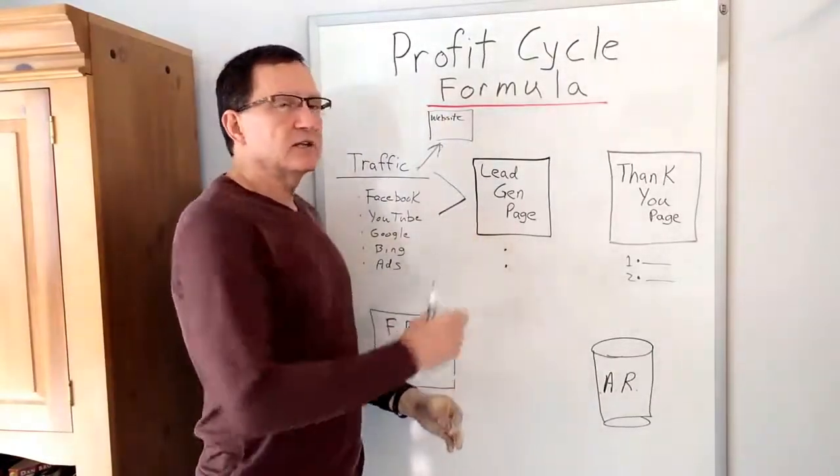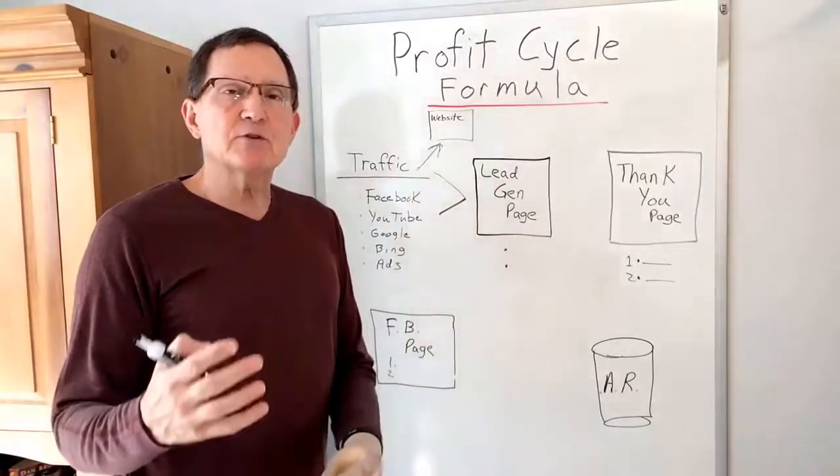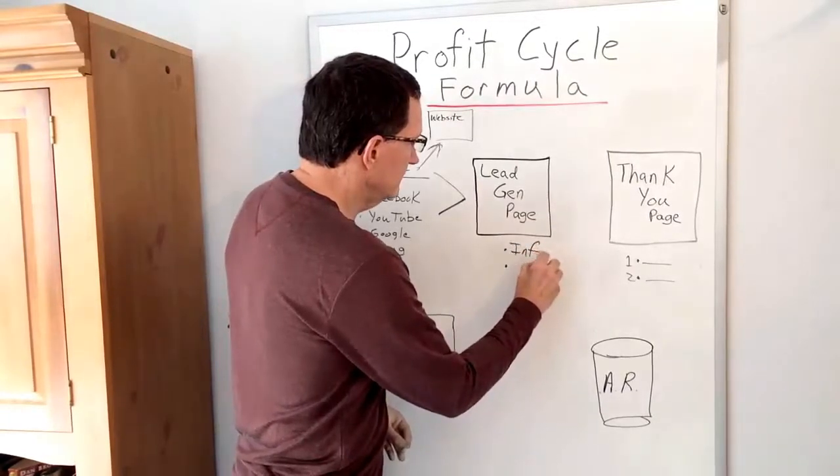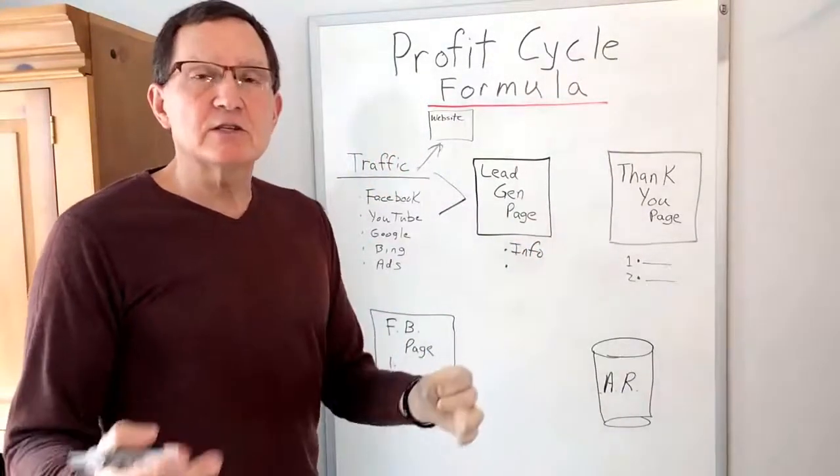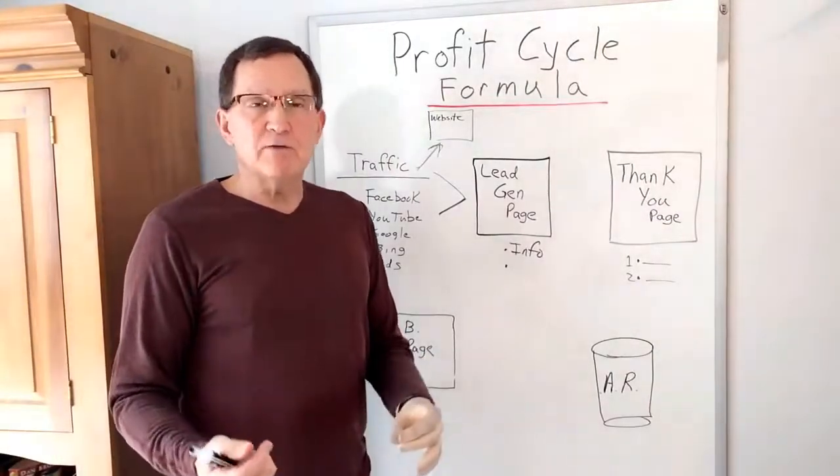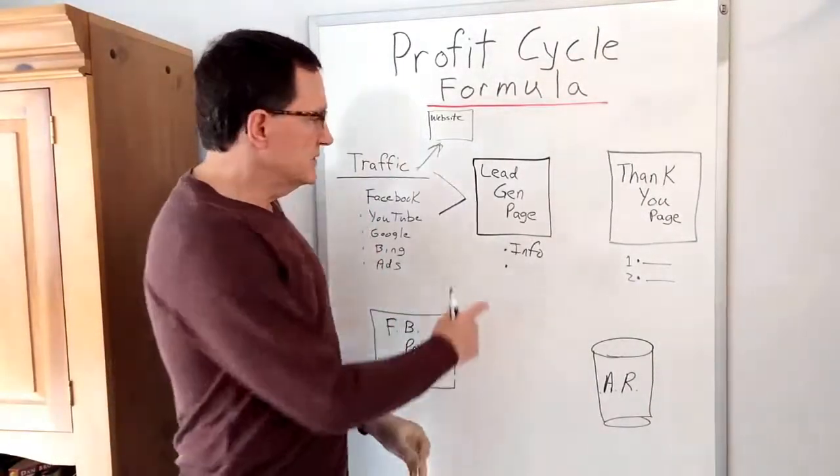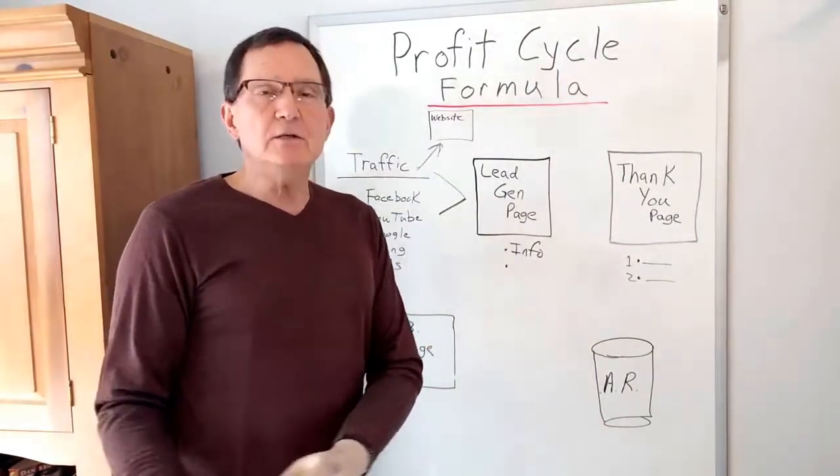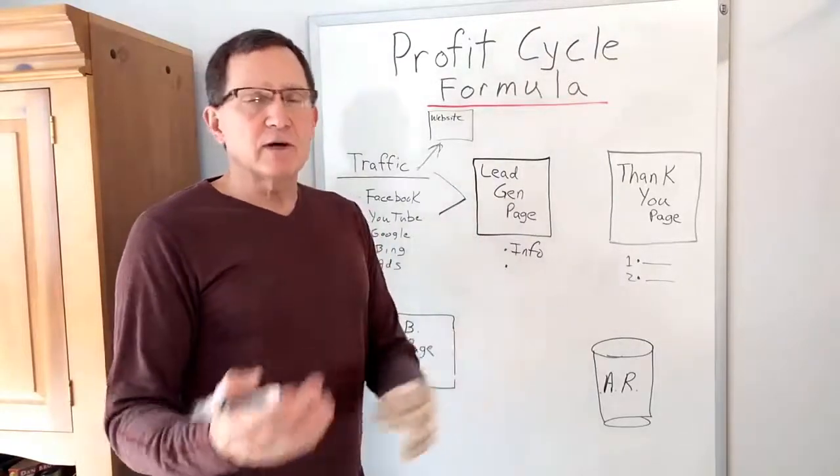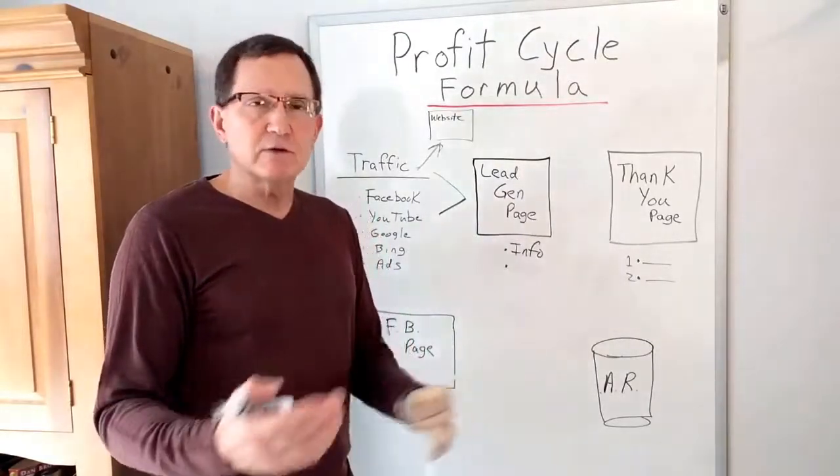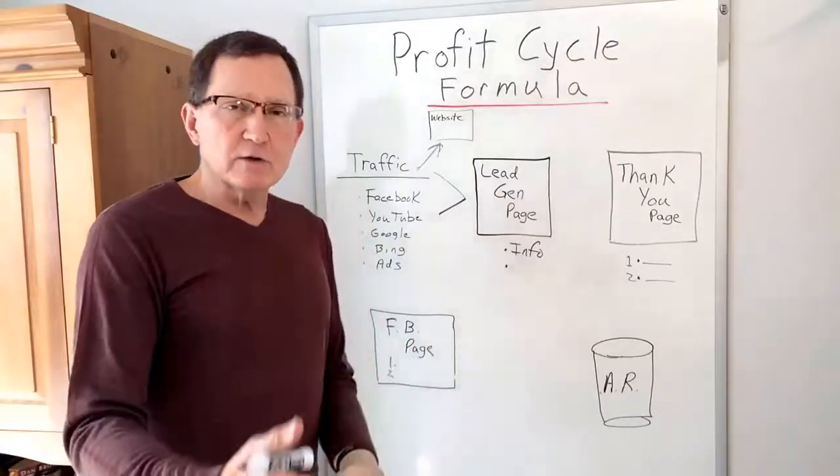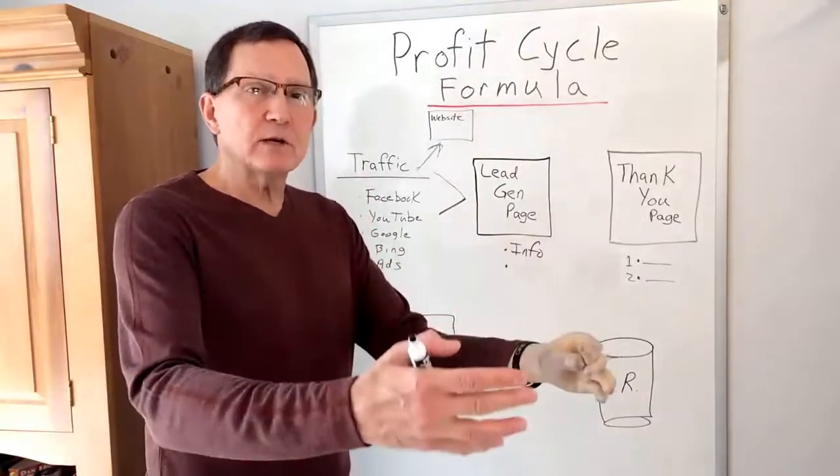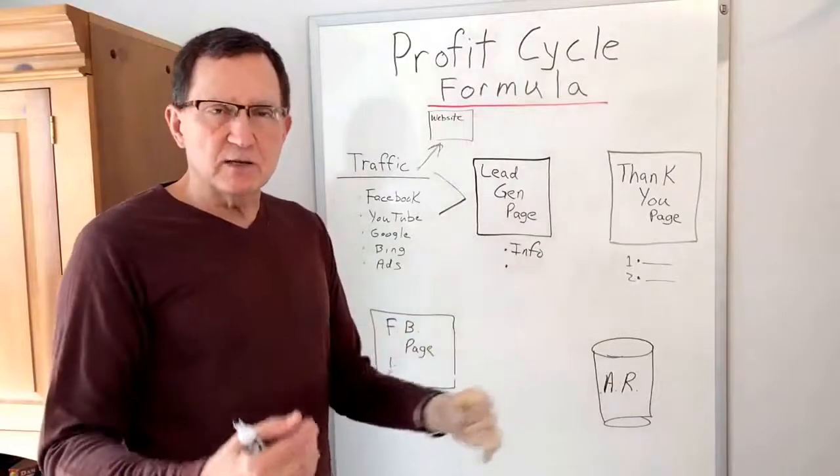The lead generation page is designed, it's optimized to capture their information. What's really important here is we get their information. Their information is typically their name, their email, maybe their phone number. It just depends on your business and what you're trying to collect. But it's important that we ask them for their information. Now you all know in exchange for information, we need to give them something. That's typically a giveaway. Maybe it's a discount coupon, maybe it's a free ebook, maybe it's a free service. Whatever it might be for your business, the goal is you got to give them something to get something. That's the value exchange in any business.